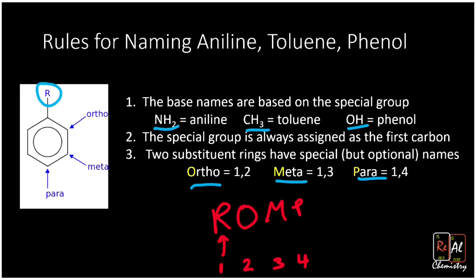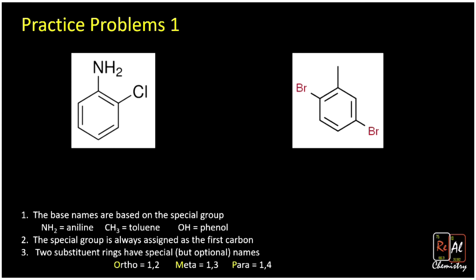All right, so now we're going to jump into some practice. Two separate compounds - let's name them. First of all, we need to identify which type of base special benzene derivative these are. Notice in our compound on the left there, we see NH2, which means that we got ourselves an aniline. We know we have aniline - that's going to be our base name. We can go ahead and write that, so we can put aniline.